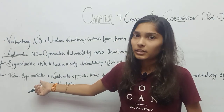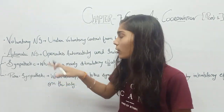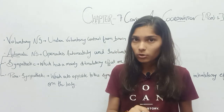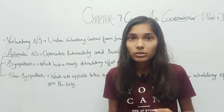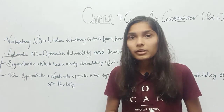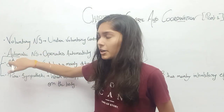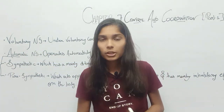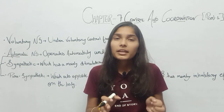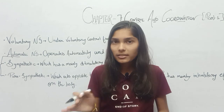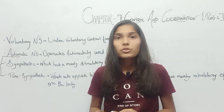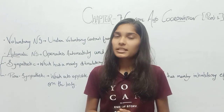I hope you understand the nervous system. In the nervous system there are 2 types: Central Nervous System — Brain and Spinal Cord — and Peripheral Nervous System — Voluntary and Automatic, with Sympathetic and Parasympathetic. We have done this revision. I hope you like this video. Please like, share and subscribe to my channel. Thank you.